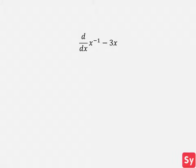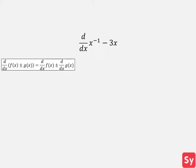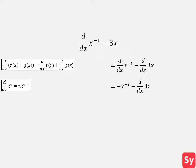For the next example, we want to compute the derivative of x to the negative 1 minus 3x. We first use the sum difference rule. This equals the derivative of x to the negative 1 minus the derivative of 3x. We will solve the derivative of x to the negative 1 first. We use the power rule. This equals negative x to the negative 2 minus the derivative of 3x.